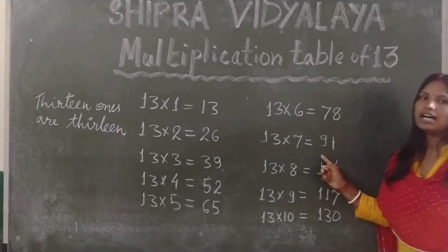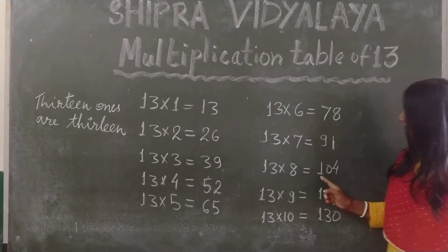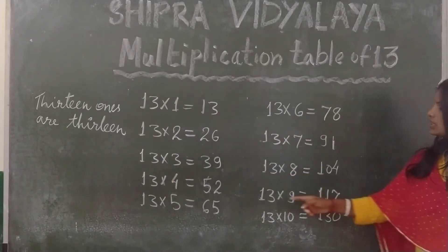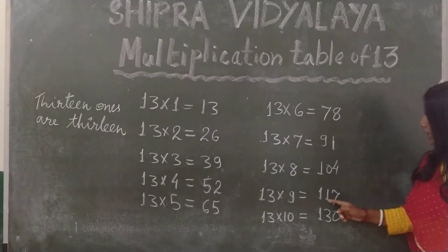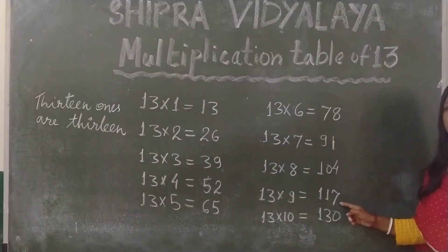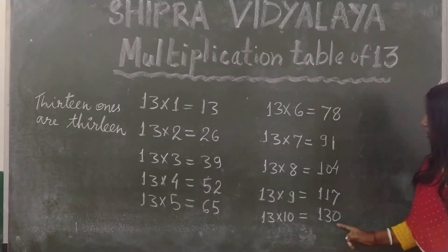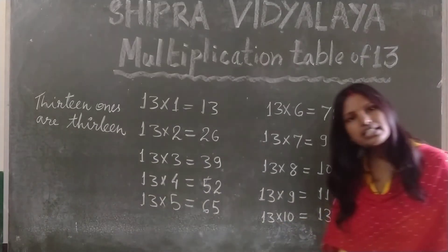13 7's are 91. 13 8's are 104. 13 9's are 117. 13 10's are 113.